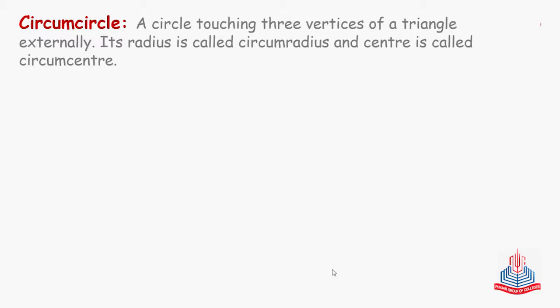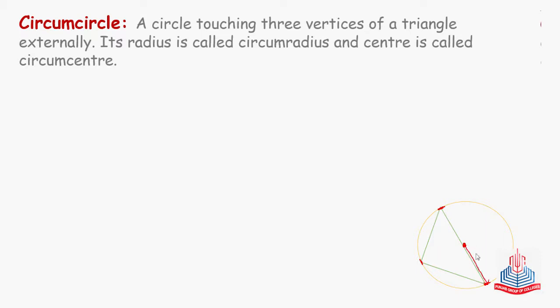Let's see this in a diagram. This is a triangle and this is the circumcircle — a circle touching three vertices: here, here, and here. Now we will discuss its center. Suppose the center is here. The distance from the center to each vertex — these three distances — are all equal, and these are the circumradius. The circumcenter is a point which is equidistant from three vertices of the triangle.